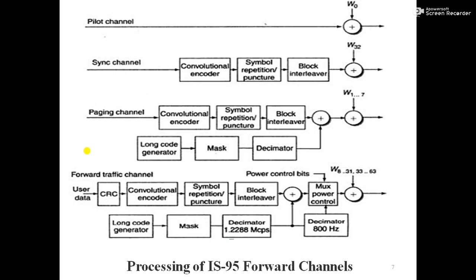The forward traffic channel uses Walsh channels 8 to 31 and 33 to 63. It is FEC-encoded and interleaved, then scrambled with a sequence specific to the intended mobile user. Signaling and control bits are multiplexed with the traffic data, then spread with an assigned Walsh-Hadamard sequence orthogonal to all other Walsh-Hadamard codes. The forward channel supports 55 traffic channels. Traffic channel data rates are up to 9600 bps in RS1 and up to 14400 bps in RS2.